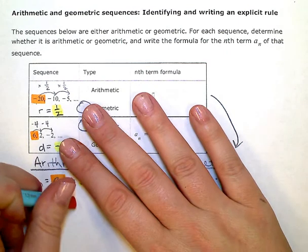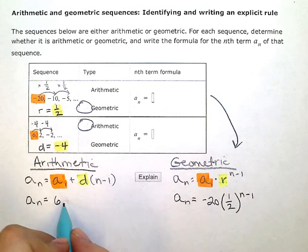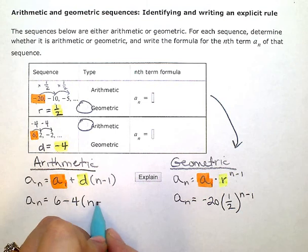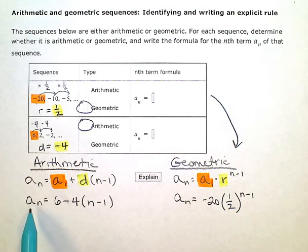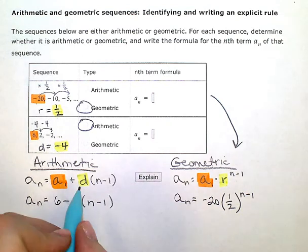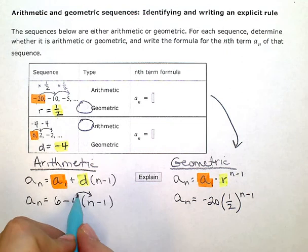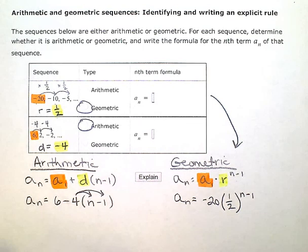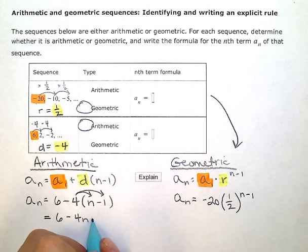So in fact, I'm going to erase this plus and put minus 4 times (n minus 1). Now, when we do arithmetic formulas, we usually have a little bit of simplifying to do after this. What I need to do now is distribute this and combine my like terms to clean things up. So this is going to be 6 minus 4n, and then negative 4 times negative 1 will be positive 4.